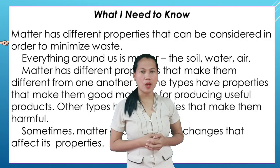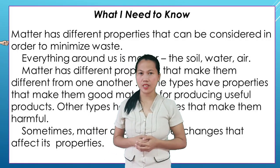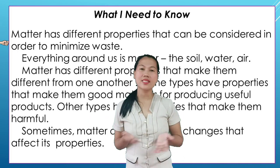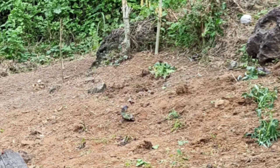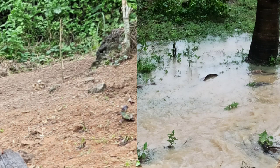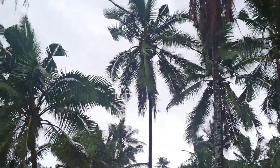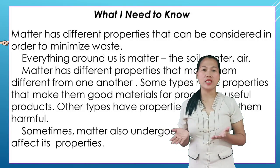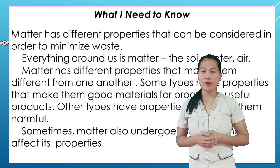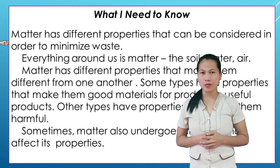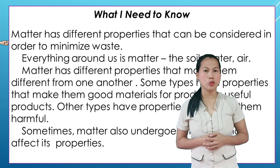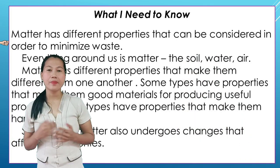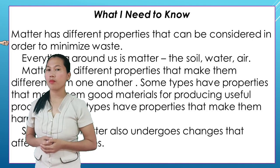Matter has different properties that can be considered in order to minimize waste. Everything around us is matter. Matter has different properties that make them different from one another. Some types have properties that make them good materials for producing useful products, while other types have properties that make them harmful.